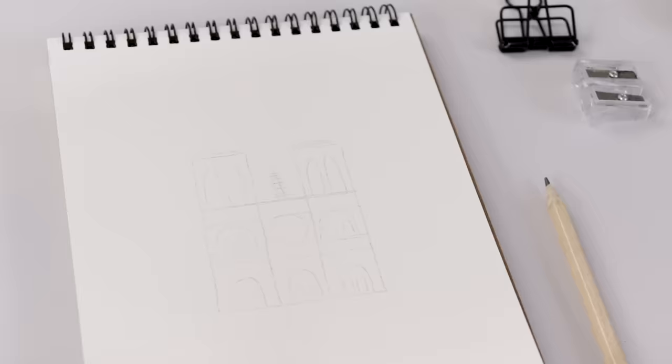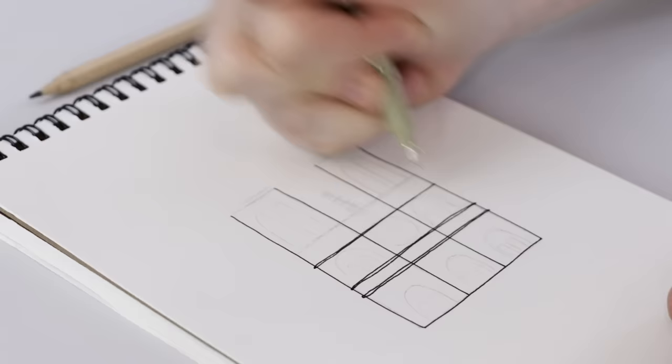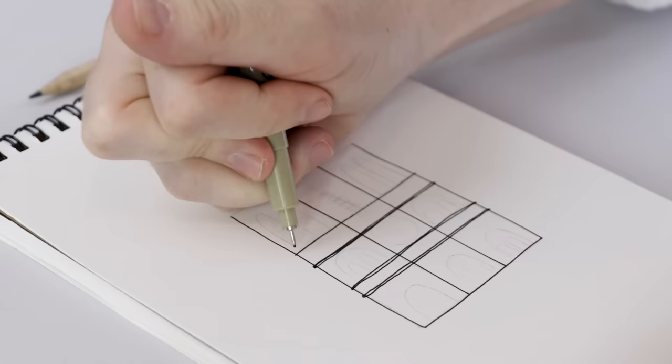You can see it's sort of up to you how much you want to transfer. I find with the graphite sometimes it can get a little muddled, it can be a bit heavy and hard to erase. So what I do is I just transfer the basics and then I keep my tracing paper right there.